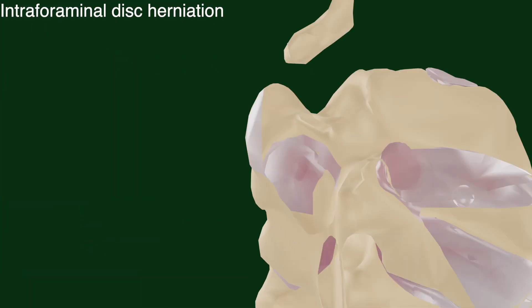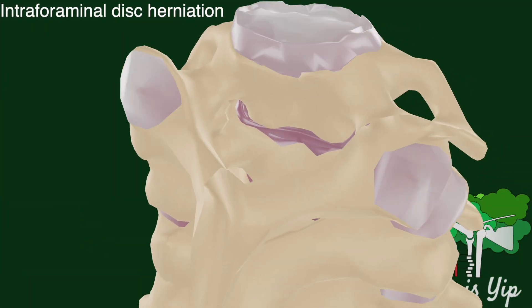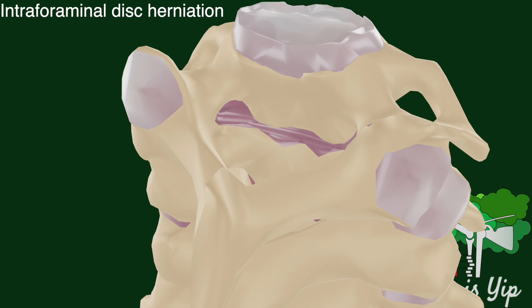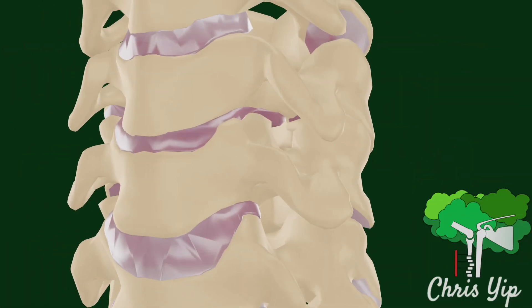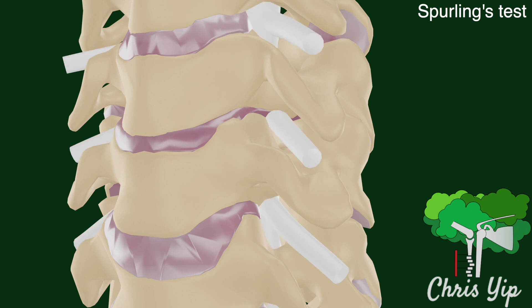Specifically, an intraforaminal type of disc herniation, where the intervertebral disc herniates laterally towards the foramen, compressing on the nerve root. There are different variations of the Spurling's test, all of which act to further narrow the intervertebral foramen to exacerbate the symptoms of radiculopathy.